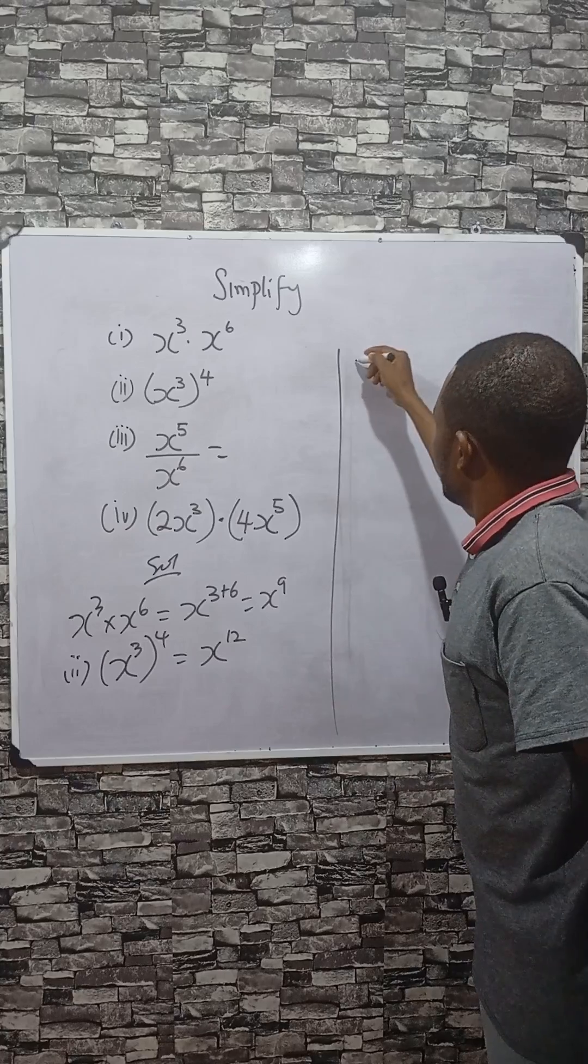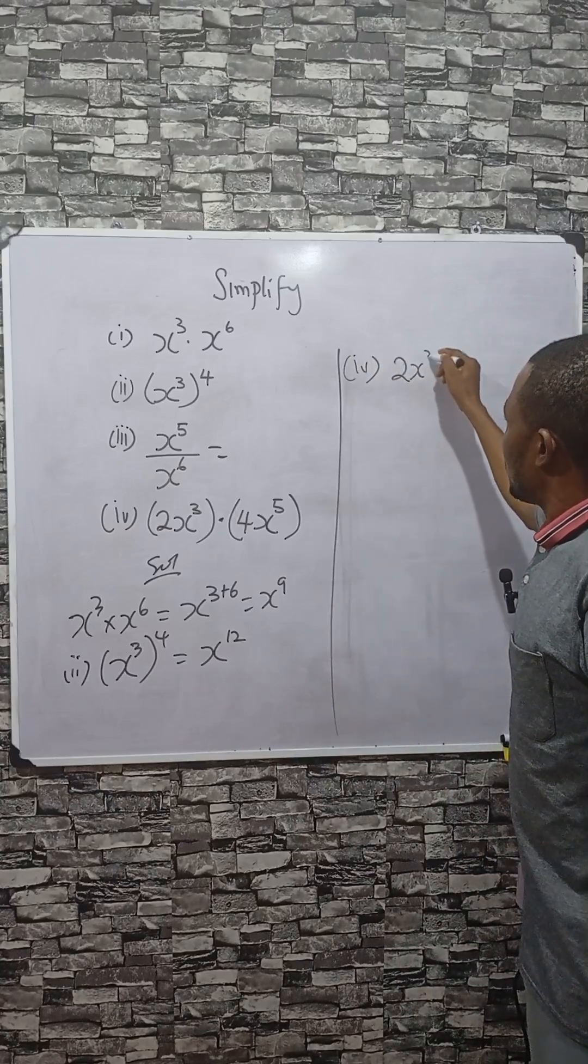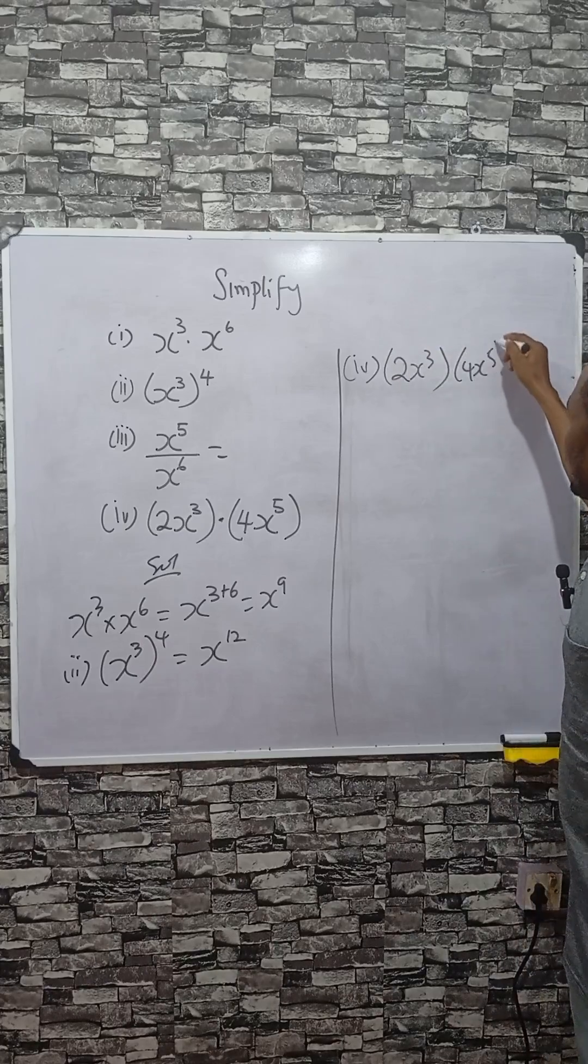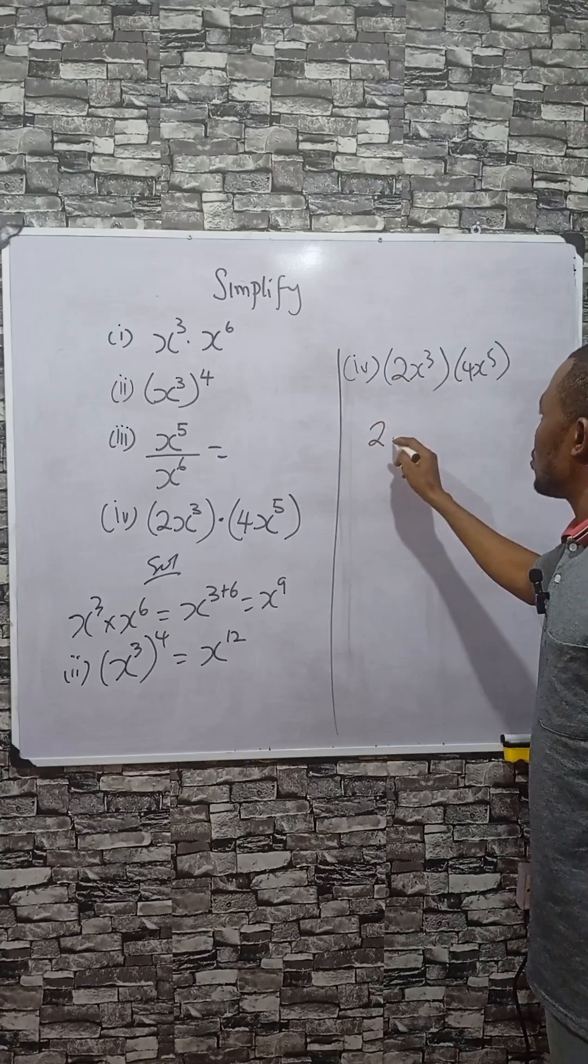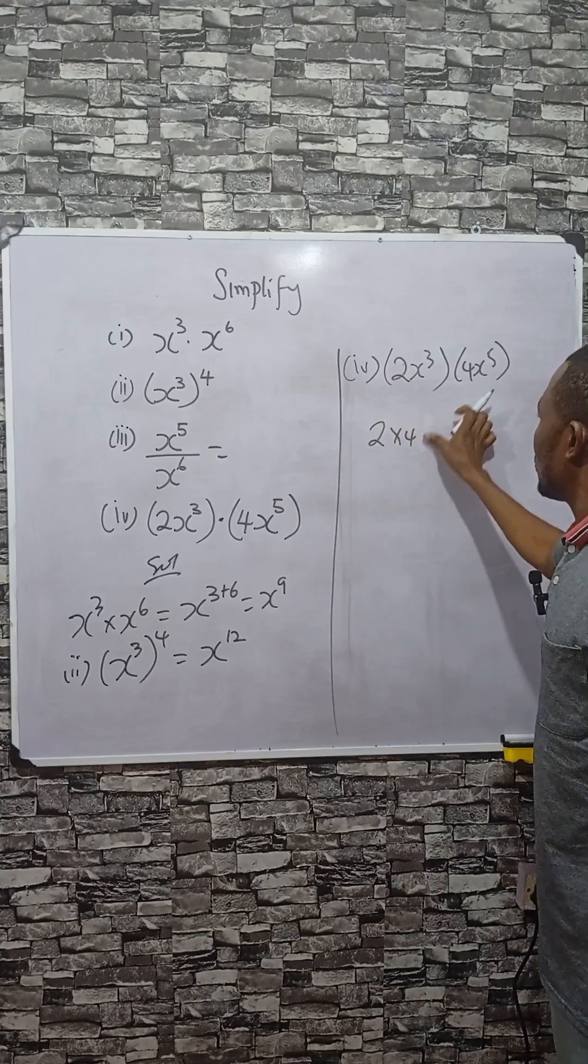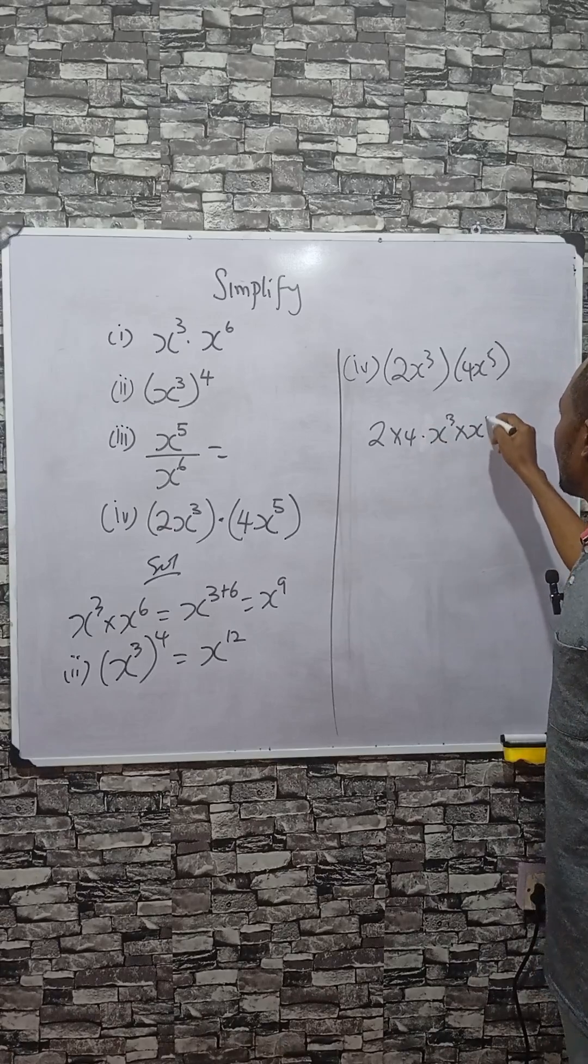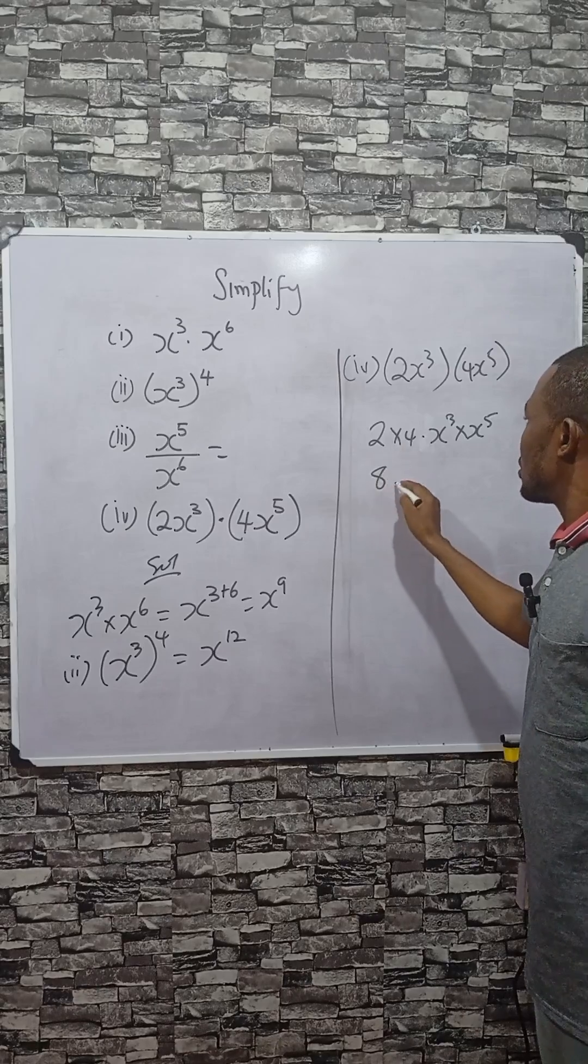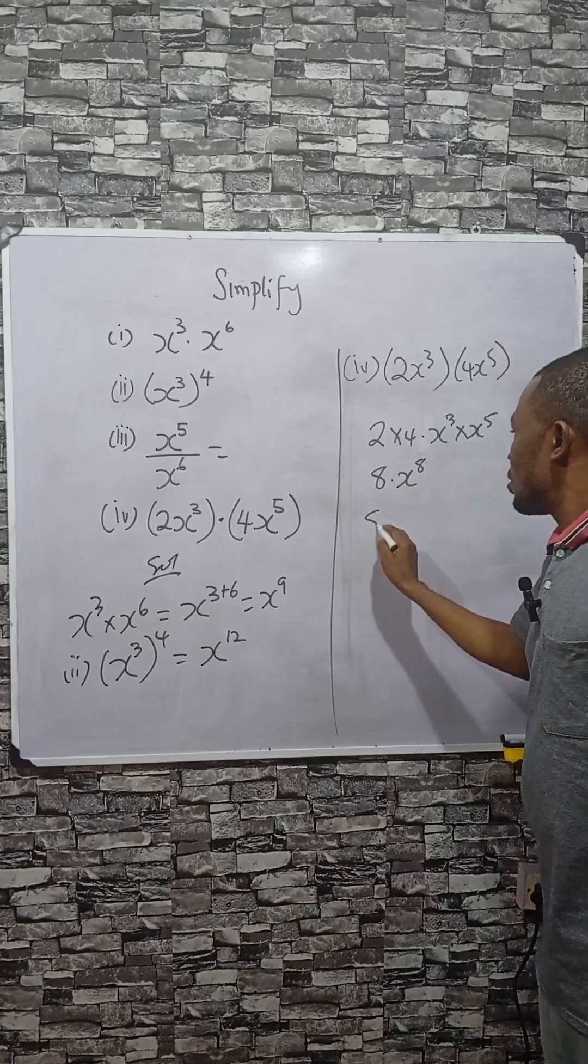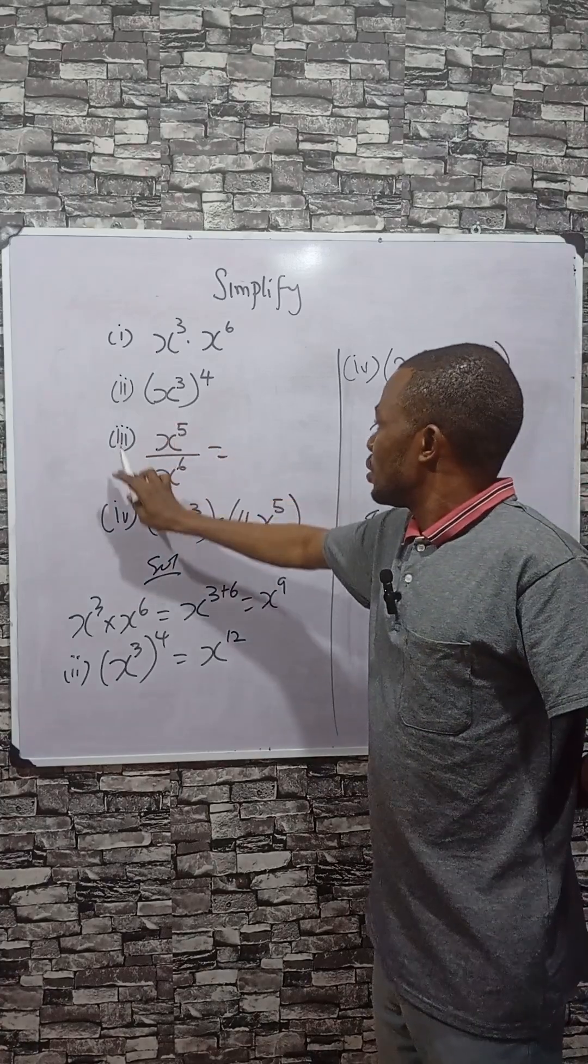The last one which I'm going to do is number 4. It says if you have 2x to the power 3 times 4x to the power 5. When you open the bracket, you have 2 times 4, then the x terms multiply themselves to be x cubed times x to the power 5. 2 times 4 is 8, and x cubed times x to the power 5, you add the powers, so 3 plus 5 is 8. The answer is 8x to the power 8.